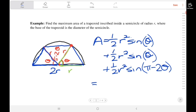We can simplify this slightly because the first two terms are equivalent. So we get r squared sine of theta plus one-half r squared sine of pi minus 2 theta.